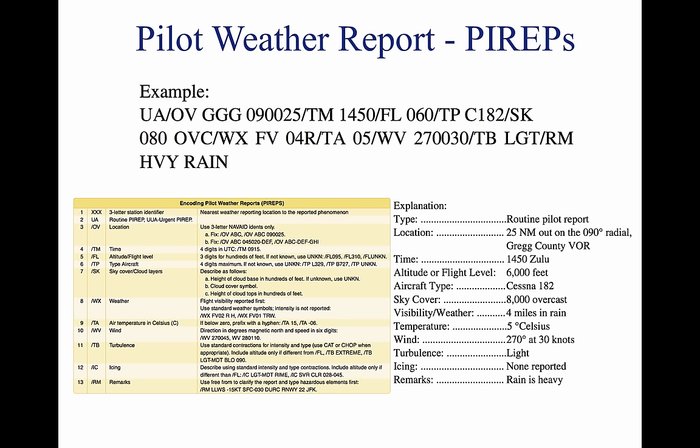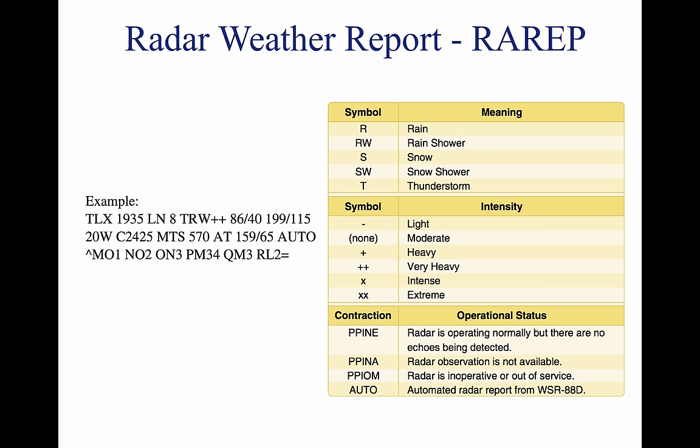The PIREP form requires items 1 through 5 as required information when making a report, as well as at least one weather phenomenon encountered. Pilot reports are easily decoded, and most contractions used in the reports are self-explanatory. Areas of precipitation and thunderstorms are observed by radar on a routine basis. Radar weather reports (RAREPs) or storm detections (SDs) are issued by radar stations at 35 minutes past the hour, with special reports issued as needed.